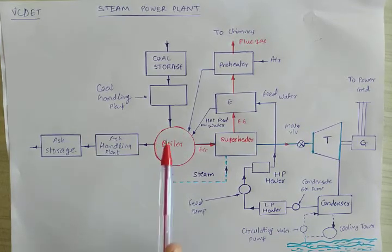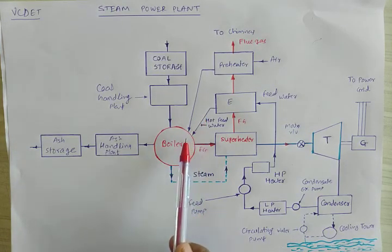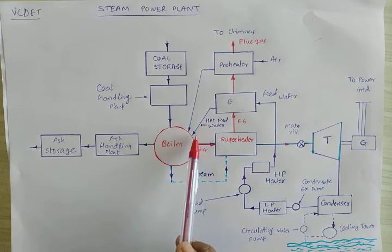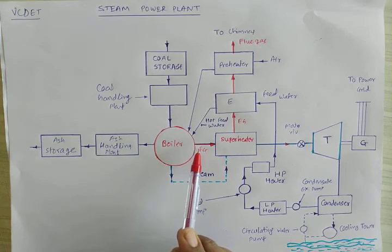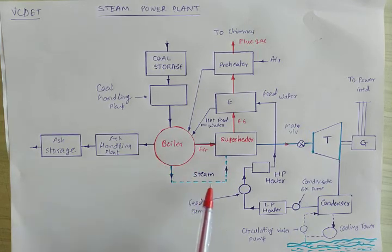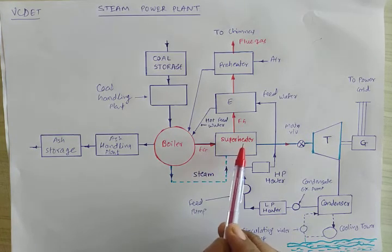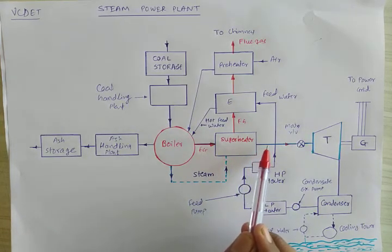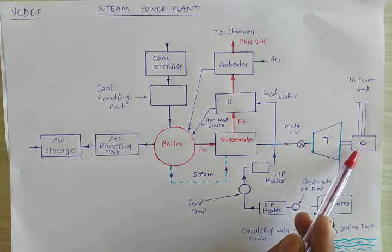Initially, when coal enters the combustion chamber, with the help of pre-heated air, the feed water comes from the economizer. The hot feed water is collected and, at high temperature and high pressure, it is converted into steam. That steam is forwarded to the super-heater, where flue gases flow through. The steam becomes superheated there, then it is forwarded to the turbine. The shaft of the turbine is coupled to the shaft of the generator.